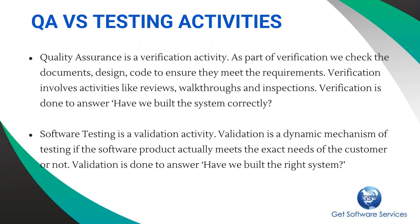Let's see the activities done as part of QA and testing. There are actually two things: verification and validation. Quality assurance is a verification activity — as part of QA we check the documents, check if the documents are created properly, check if the design is right, and check if the code is written following the right process. It involves things like reviews — checking documents to make sure there are no mistakes. We give walkthroughs to team members to ensure the process done is right. Inspections are more formal reviews where we follow a formal review process for each document to ensure there are no mistakes. All this is part of quality assurance, which focuses on whether we have built the system correctly and whether the process followed is the right one.